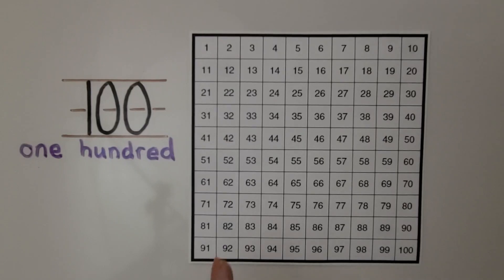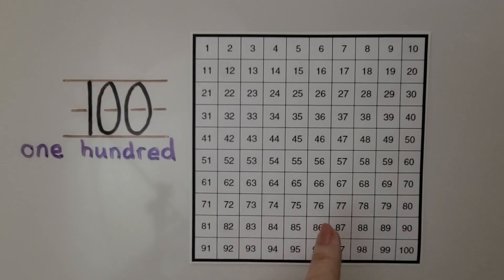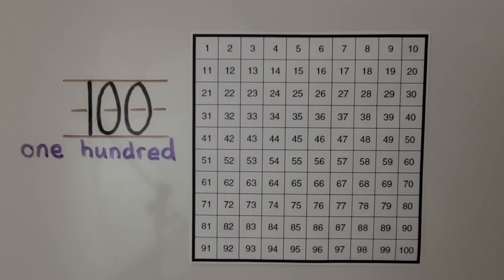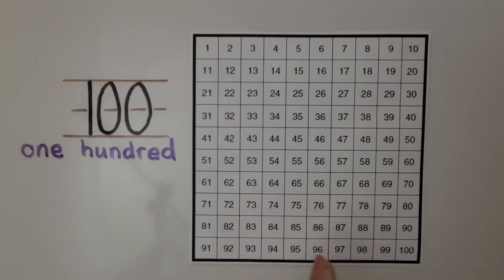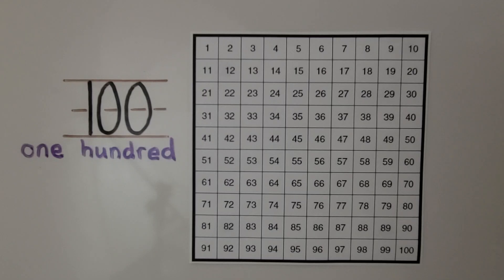So as you're counting using a 100 chart, remember to slide your finger across so that you don't make a mistake and skip one of the number boxes. And remember that the 100 chart is in counting order and each number is 1 greater than the number before it. In our next lesson, 8.7, we're going to count to 100 by 10s. That's all the numbers in this column. I hope you have a wonderful day. I hope you'll join me for next time, and I really hope you'll hit the like button. Bye!